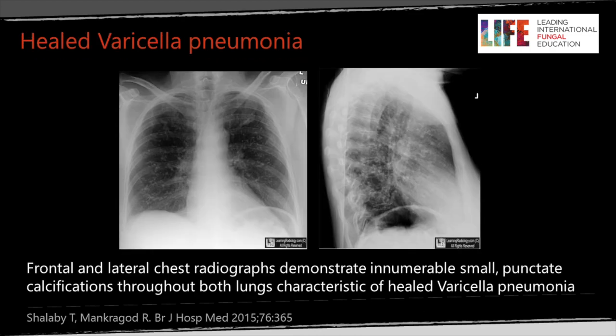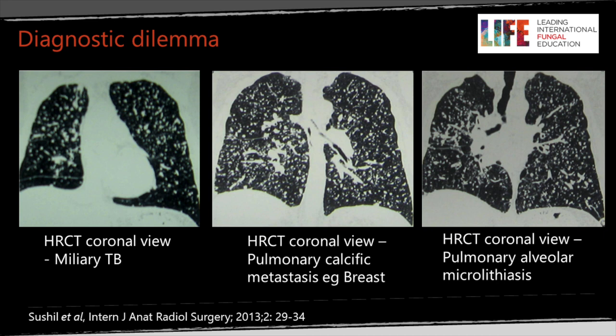This patient has had varicella pneumonia — if the person was acutely unwell these nodules would be much less dense, but now a long time afterwards the nodules have calcified. This is a diagnostic dilemma because the distribution of the nodules may look the same, but the density is very different. On lung settings it looks identical, but with a mediastinal window you'll see miliary TB are soft tissue nodules, whereas calcified nodules from varicella and pulmonary alveolar microlithiasis are calcific — same distribution, very different diagnosis.